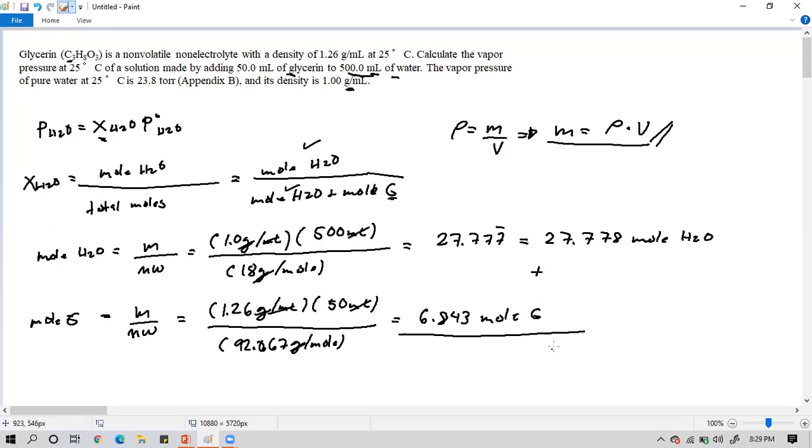So 1.26 times 50 all over 92.067, and we have a value of 0.6843 moles glycerin. I made an error in my calculator input, my apologies. So 27.778 plus 0.6843 equals 28.4623. That's the total moles for calculating the mole fraction of water.